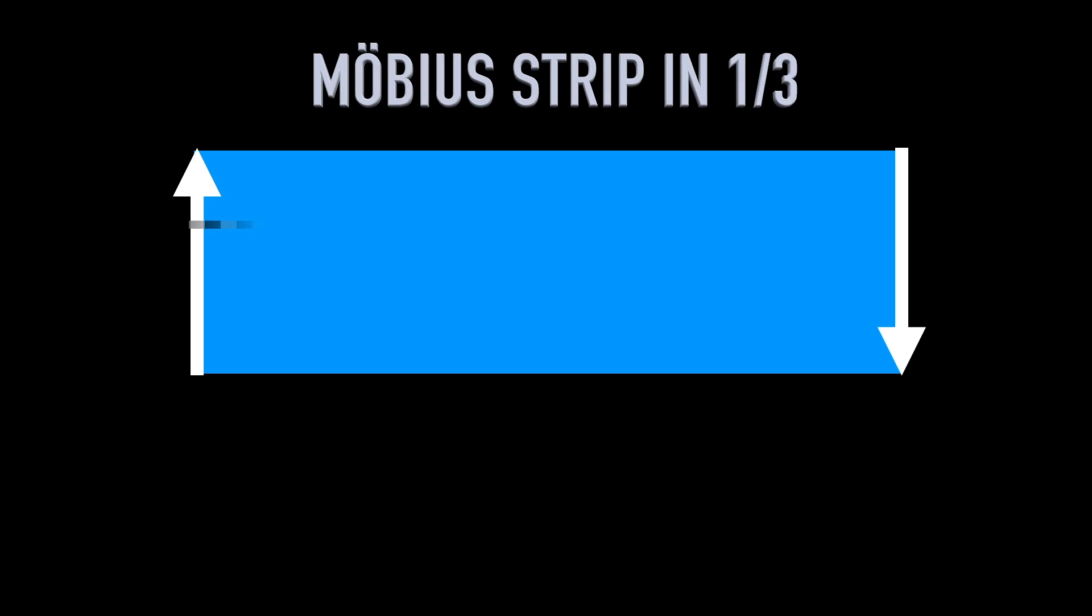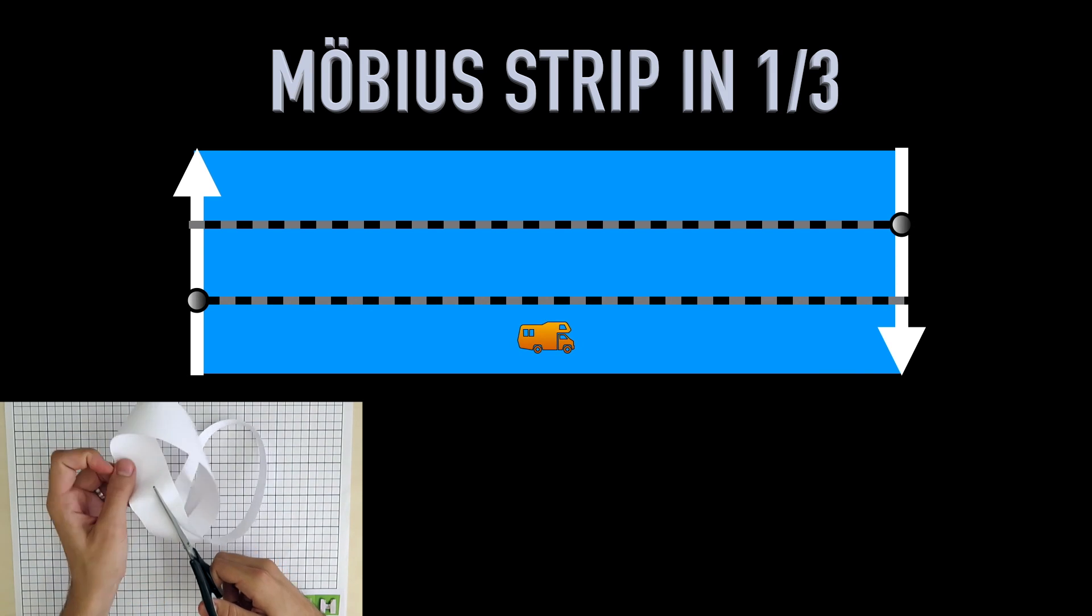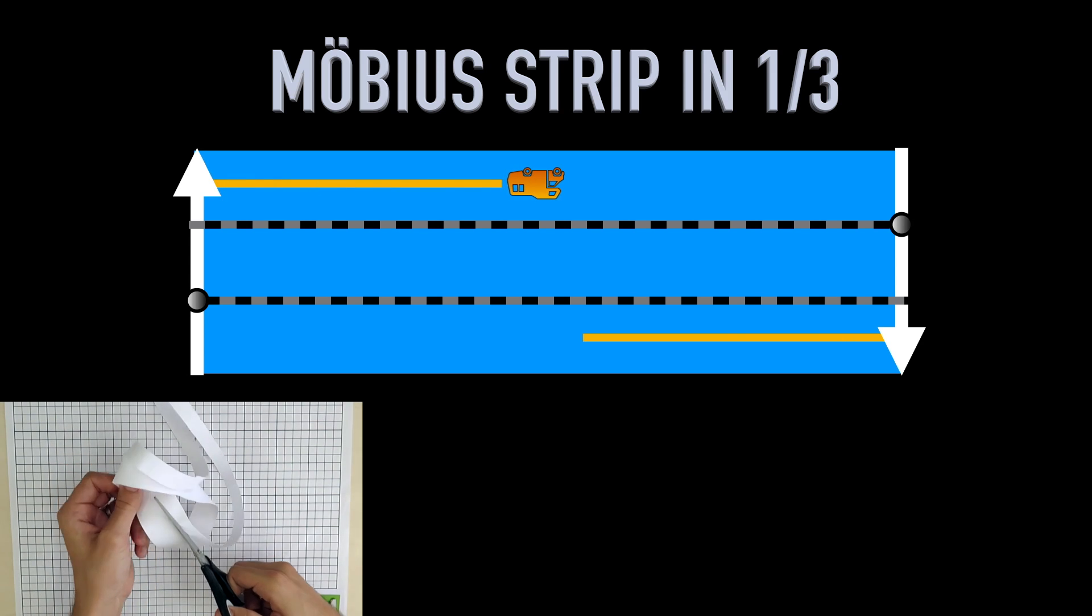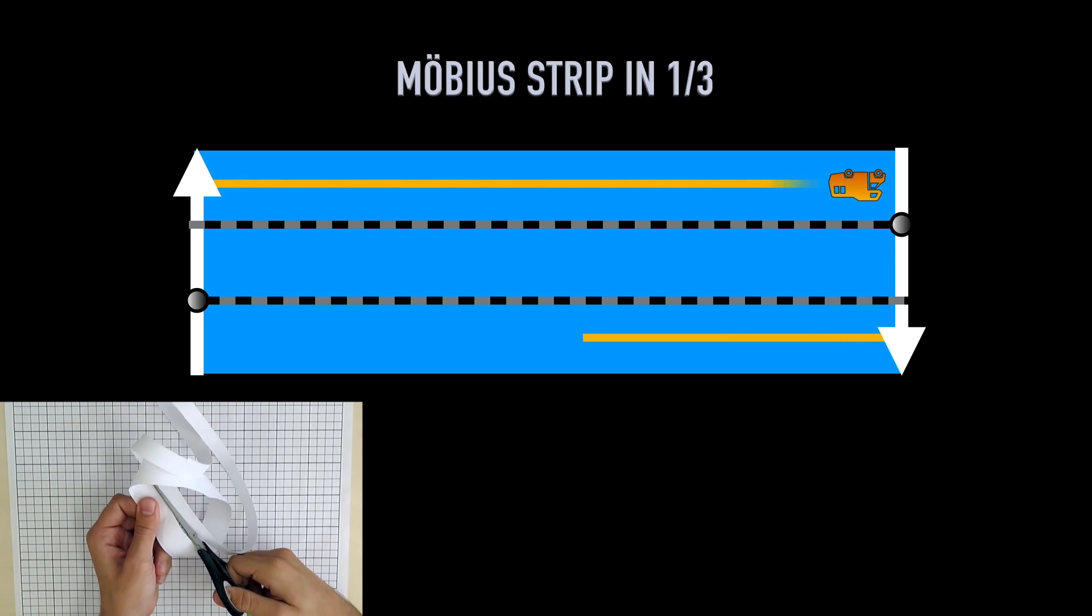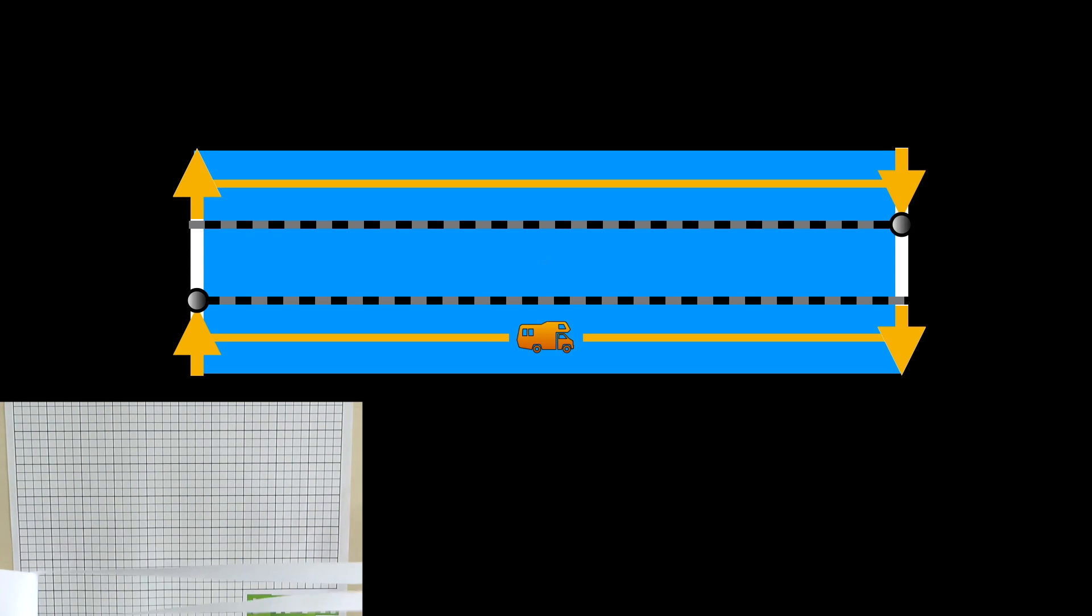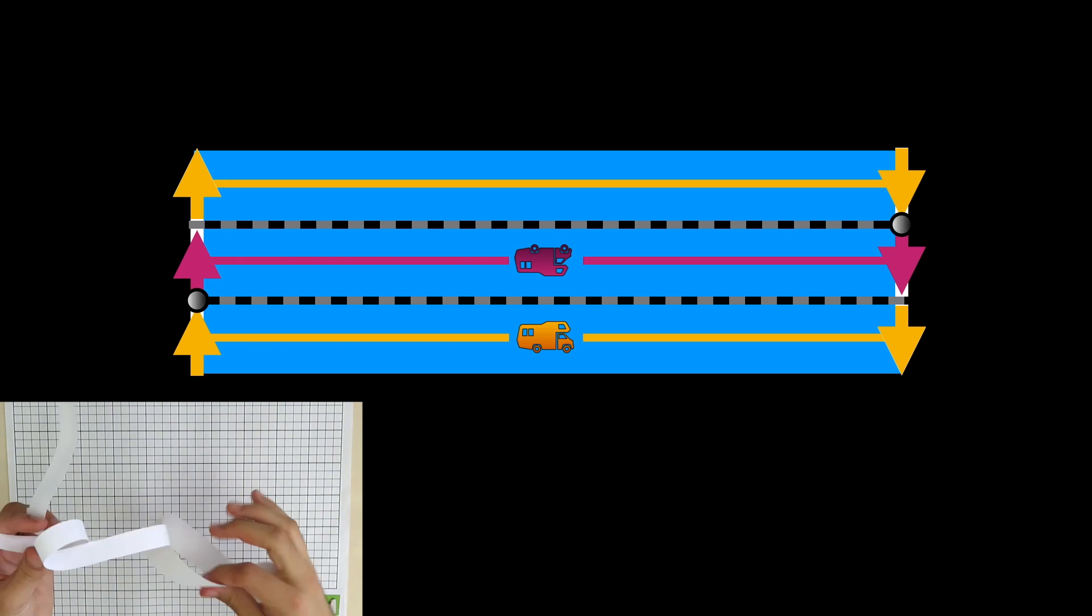We can also cut the Möbius strip in thirds. The model tells us that the cutting line will continue at the bottom third. Using the same procedure, we can see that there will be one long piece with the same number of twists as before, and in the middle we get a narrow Möbius strip. What we cannot figure out using this simple model is that the strips will be interlocked together.